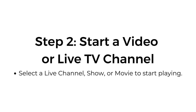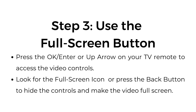Step number two, start a video or live TV channel. Select a live channel, show or movie to start playing. Step number three, use the full screen button. Press the OK or Enter or up arrow on your TV remote to access the video controls. Look for the full screen icon, or press the back button to hide the controls and make the video full screen.